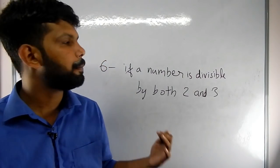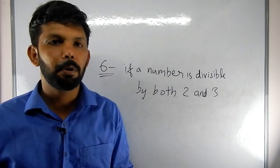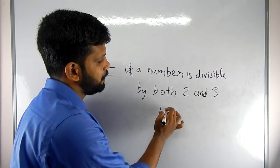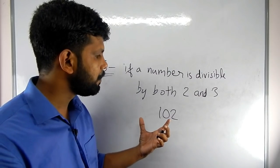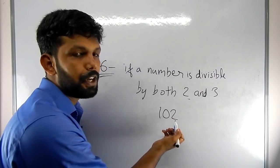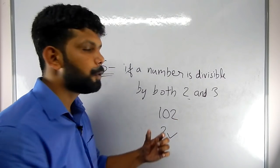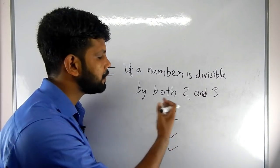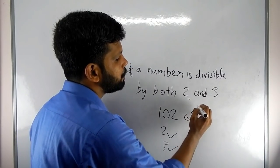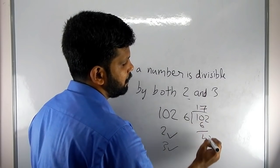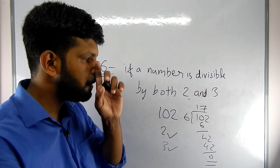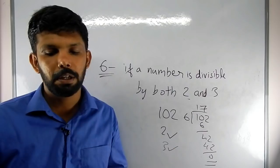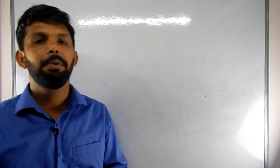Divisibility rule of 6: a number is divisible by 6 if it is divisible by both 2 and 3. For example, consider 102 — 102 is divisible by 2, and the sum of digits 1 plus 0 plus 2 equals 3, which is divisible by 3. So 102 is divisible by 6.